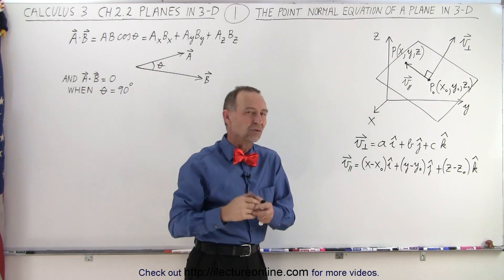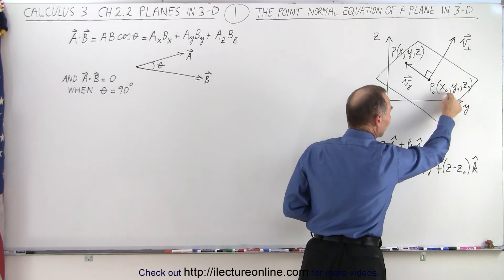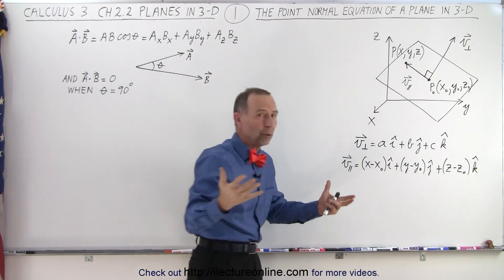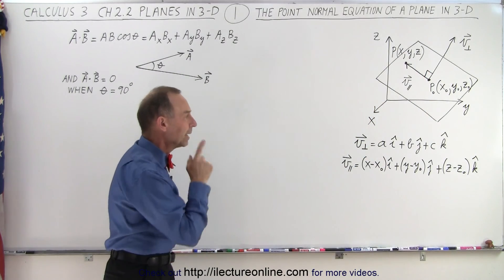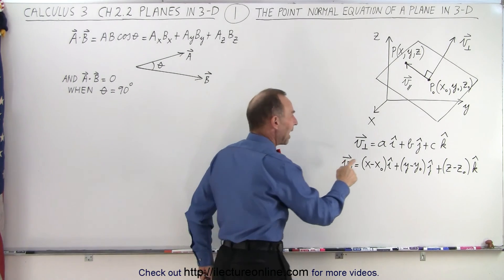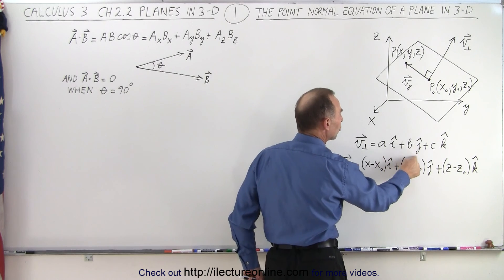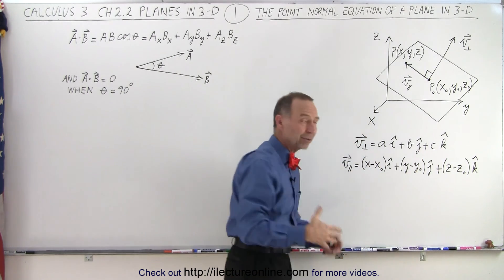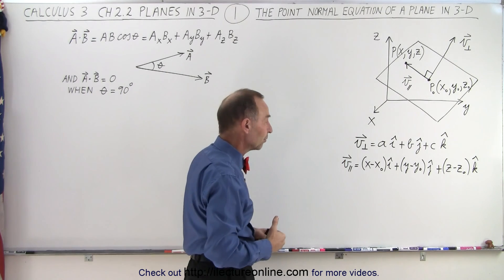Point P could be any x, y, and z. The difference is that the first point is a known point with specific values for x, y, and z, while P is just a general point with general coordinates x, y, and z. Now the vector perpendicular to the plane can be defined as a in the i-direction plus b in the j-direction plus c in the k-direction. For a particular plane, a, b, and c will be particular values.